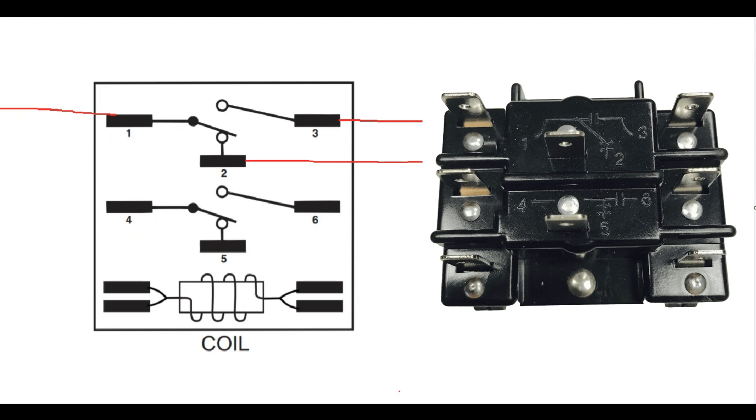So if we were to take a multimeter and check for continuity between one and three, we would get nothing. If we checked again between one and two, we would have continuity because that switch is normally closed.